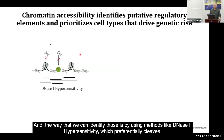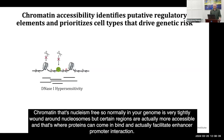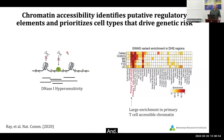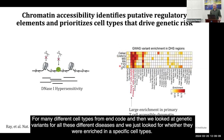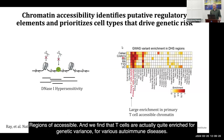We can identify enhancers using methods like DNase-1 hypersensitivity, which preferentially cleaves chromatin that's nucleosome-free. Normally your genome is tightly wound around nucleosomes, but certain regions are more accessible — that's where proteins can bind and facilitate enhancer-promoter interaction. This is very cell type-specific. We've mapped DNase-1 hypersensitivity regions for many different cell types from ENCODE, and looked at genetic variants for various diseases to see whether they're enriched in specific cell types' accessible chromatin. We find that T cells are quite enriched for genetic variants for various autoimmune diseases, which is why we use T cells.